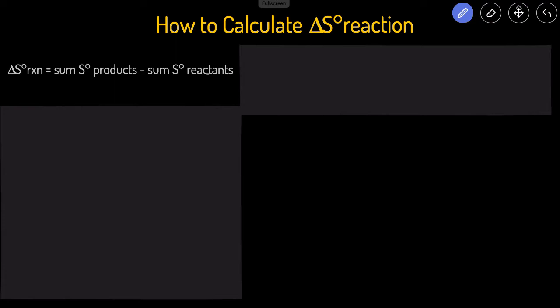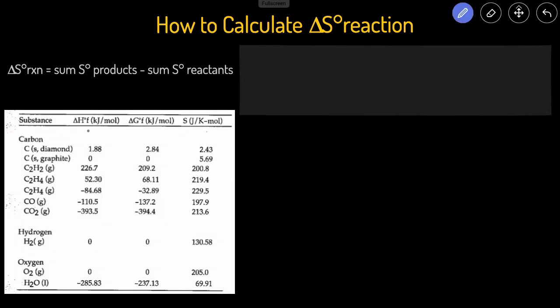Of course, this means that you would have to be given the entropy values of the products and reactants, because you're not expected to know any of these. So typically, you'll be given a table that looks something like this, where you have the species, the reactants, the products, and then you'll have the S values. Often, you'll also be given the G and H values.